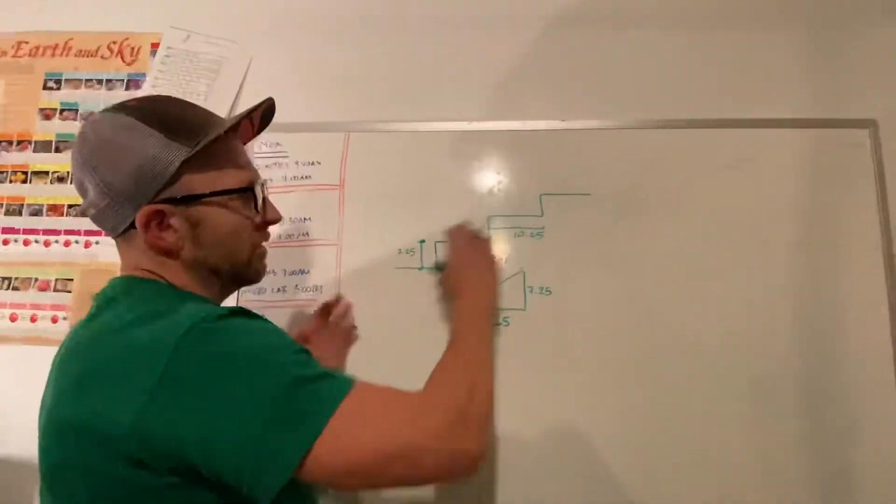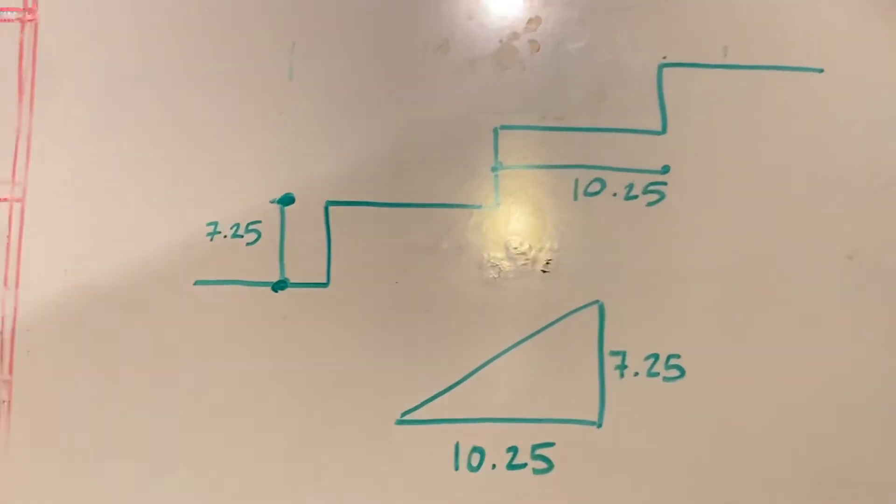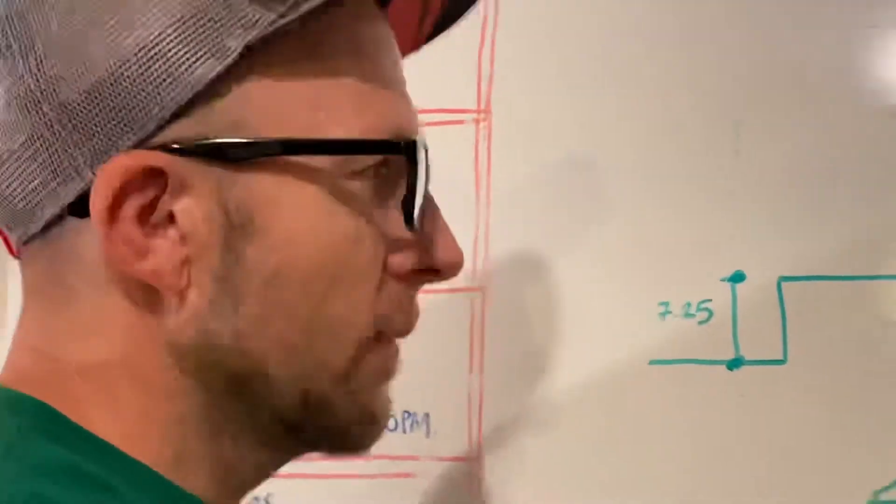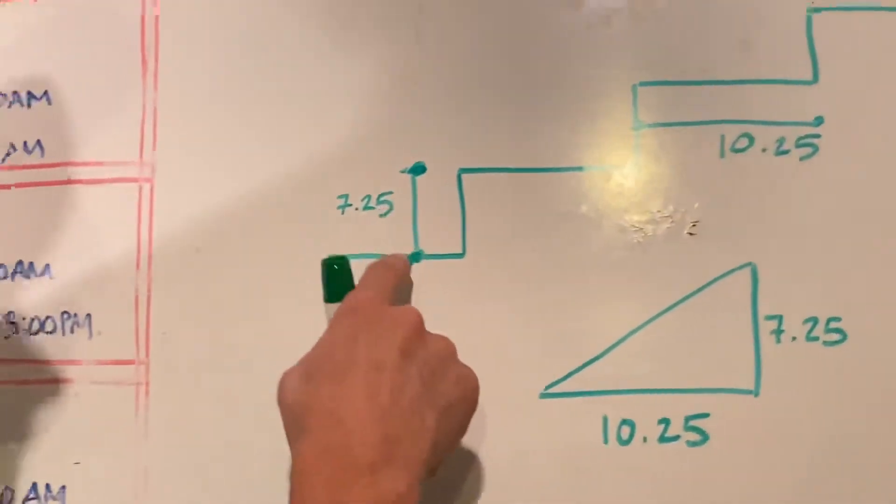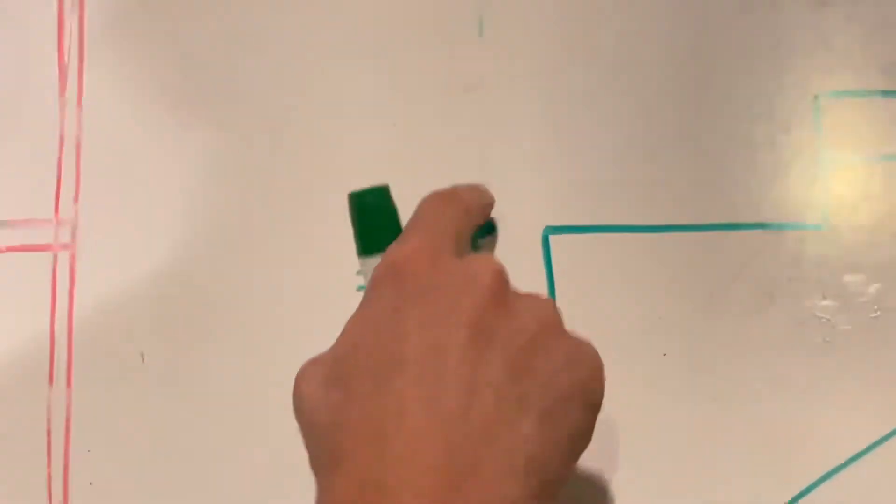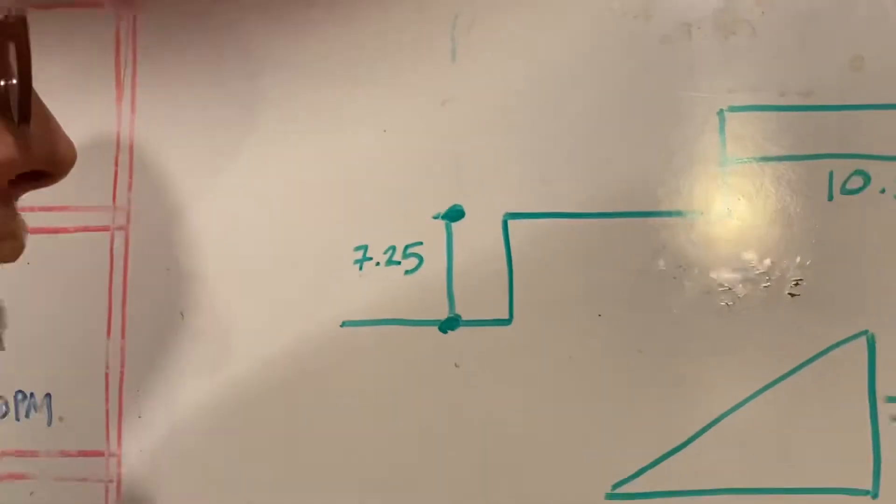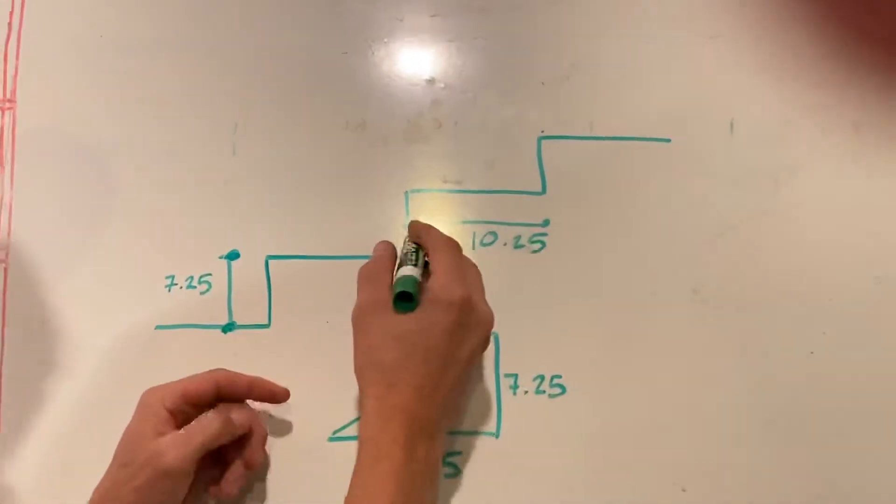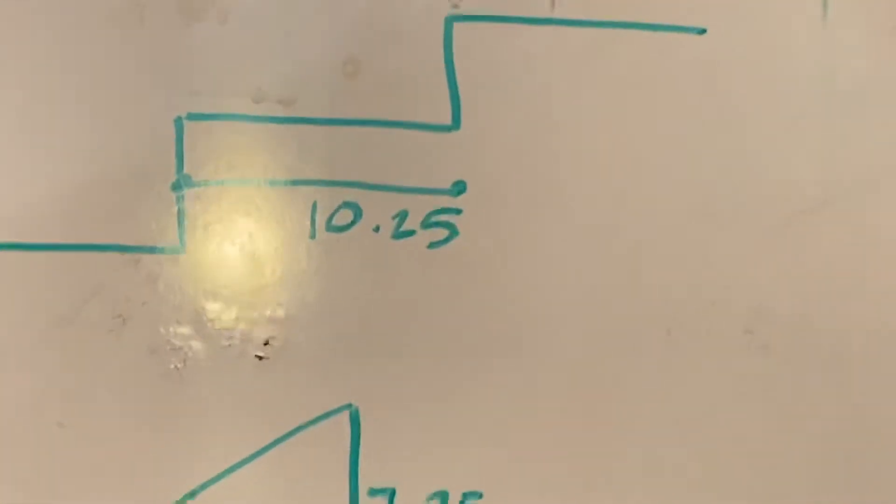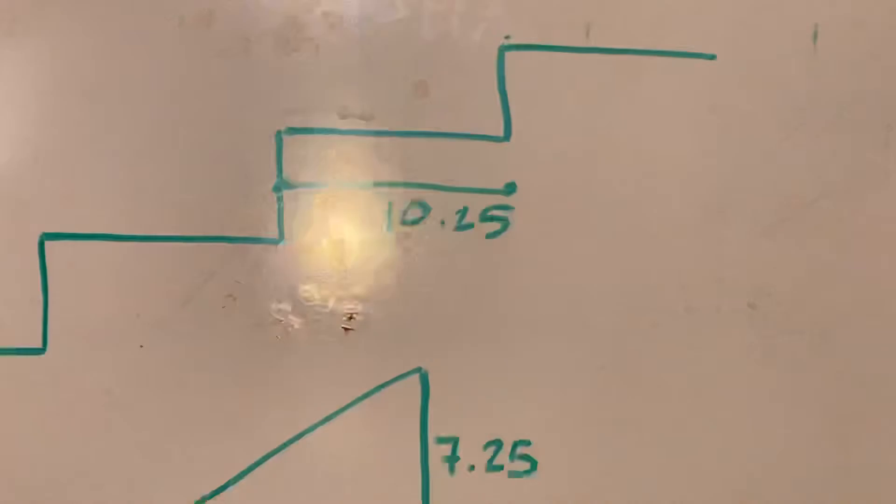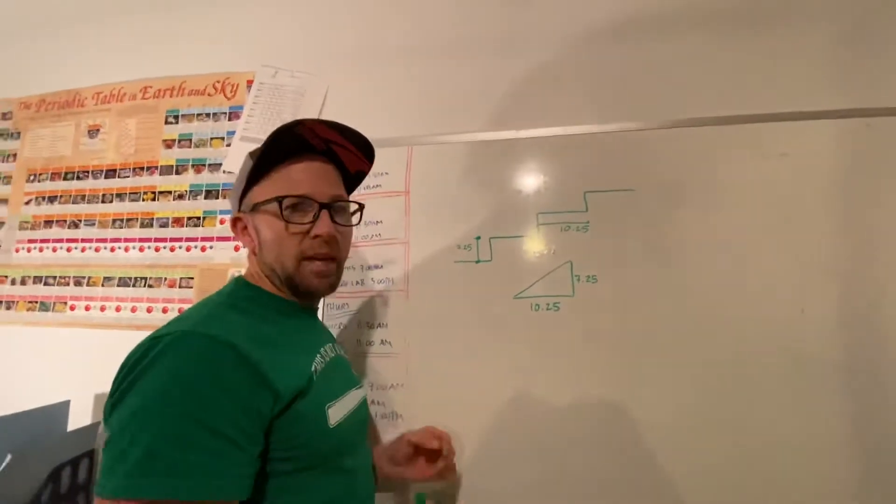So we'll take this staircase as our example. This was the one that I did the other day where you need to know your rise and your run. My rise is top of one tread to the top of the next tread. And on this staircase, it was seven and a quarter inches. My run is the length from front of this riser to front of this riser. And that was 10 and a quarter. That's probably in the ballpark real close to most household staircases.